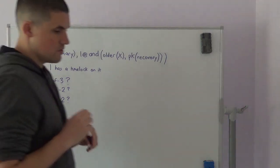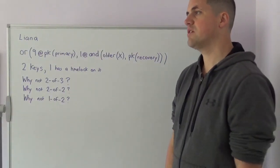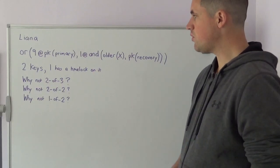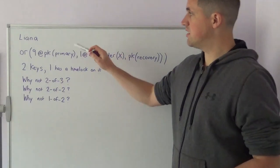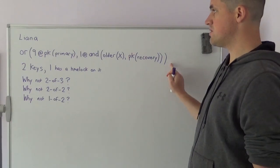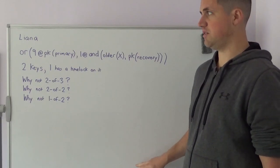Liana is a new software wallet developed by the team at Wizard Sardine, and it's one of the first software wallets to take advantage of Miniscript. The policy that Liana uses is here, and as I went into in a different video, policy compiles down to Miniscript, and Miniscript is an encoding of Bitcoin script.